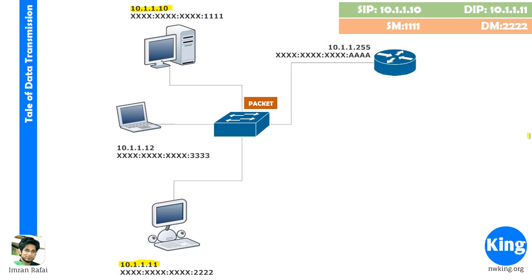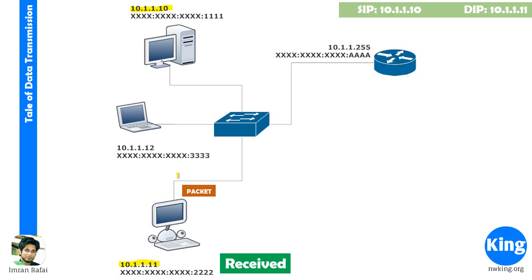The switch looks at the layer 2 information because a switch works at layer 2 and can only look at layer 2 information. It sees the packet has to go to MAC address 2222. Since the switch has intelligence and has already learned all MAC addresses, it knows which port MAC address 2222 is connected to. So the switch forwards that packet only to that specific port, and that computer receives the packet. It strips the layer 2 information, looks at the layer 3 information, realizes the packet was destined to it, accepts the packet, and the transmission is complete.